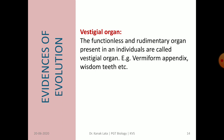The last evidence of evolution is from vestigial organs. Vestigial organs are those organs which are present in our body but are rudimentary and functionless. However, previously they were used by our forefathers. For example, the vermiform appendix and wisdom teeth.